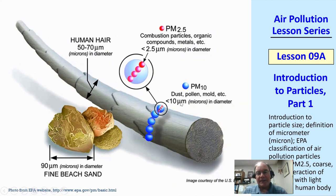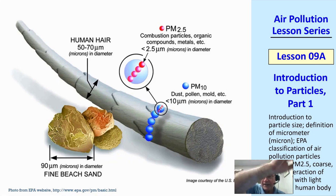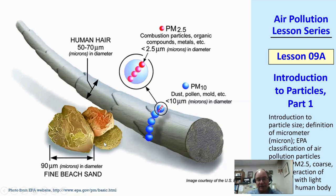The EPA puts out a diagram illustrating a human hair — this one is at about 60 microns, about in the middle of that range. PM10 is called particulate matter less than 10 microns — those would be the blue particles compared to a human hair. The little reddish-purplish ones are 2.5 microns, called PM2.5. For comparison, really fine beach sand is around 90 microns — the smallest grains.